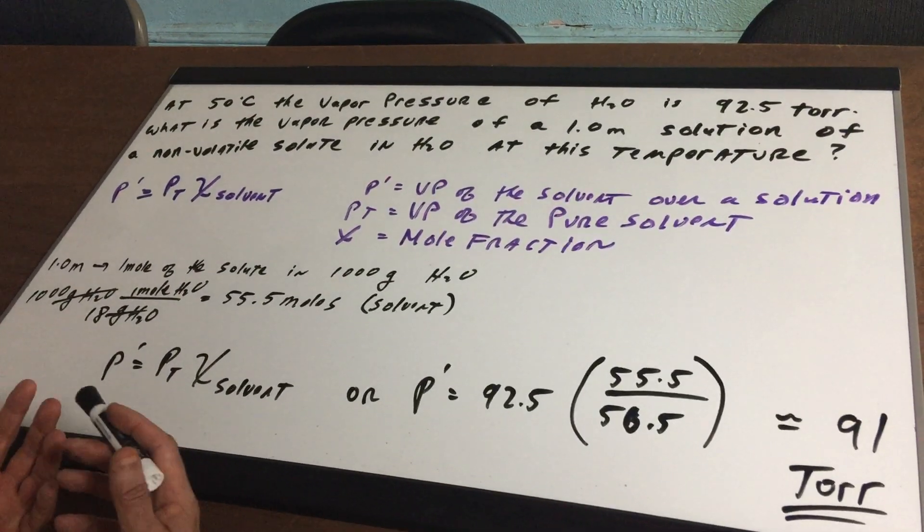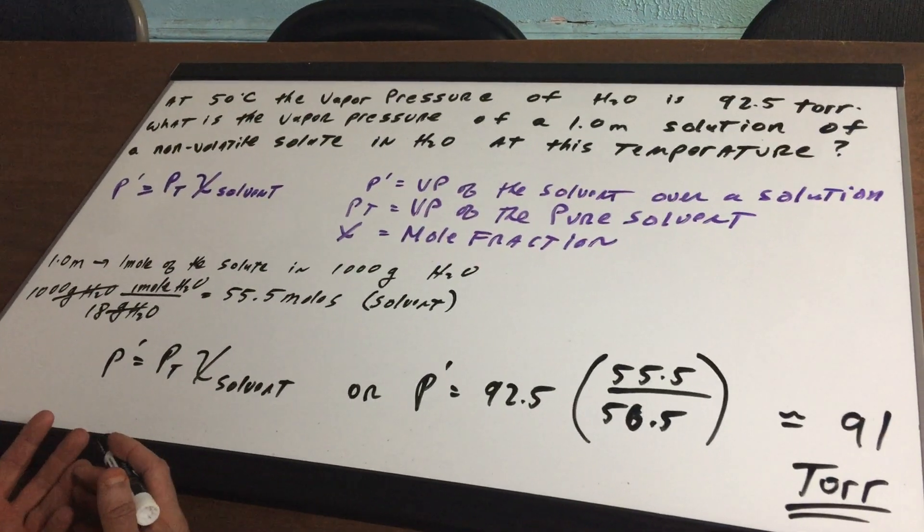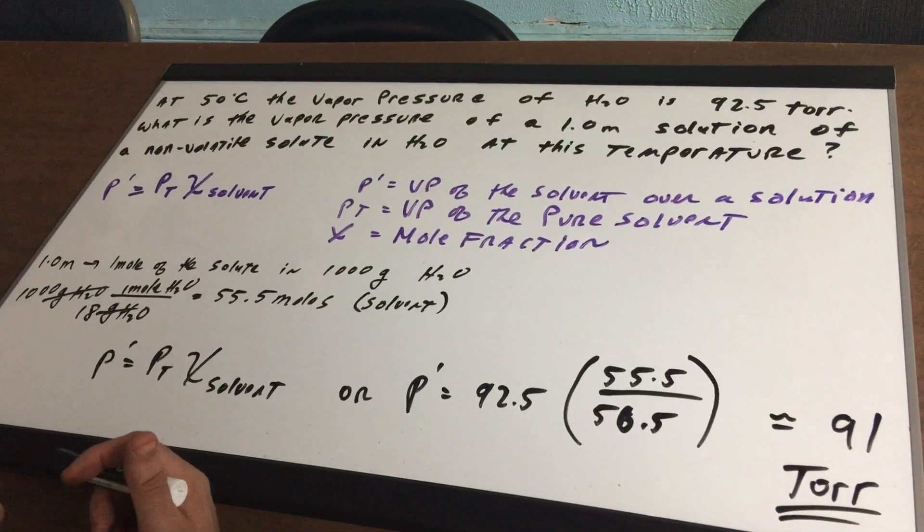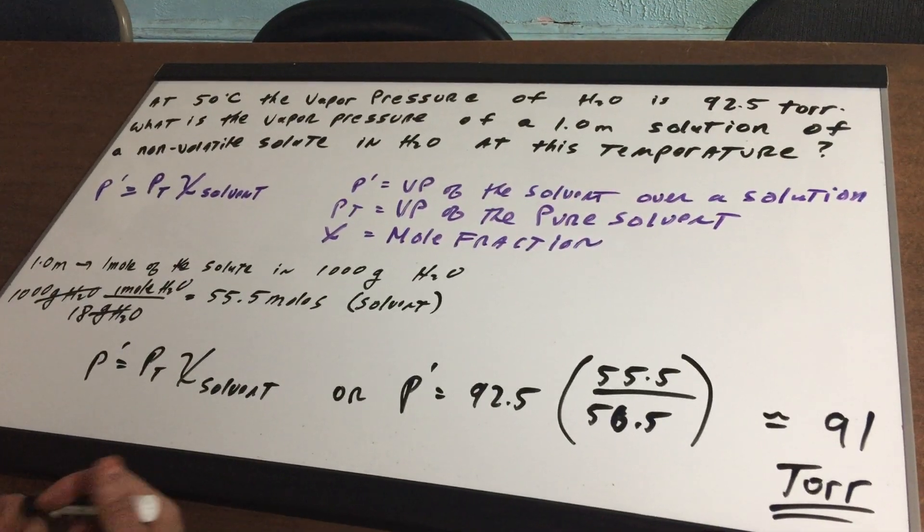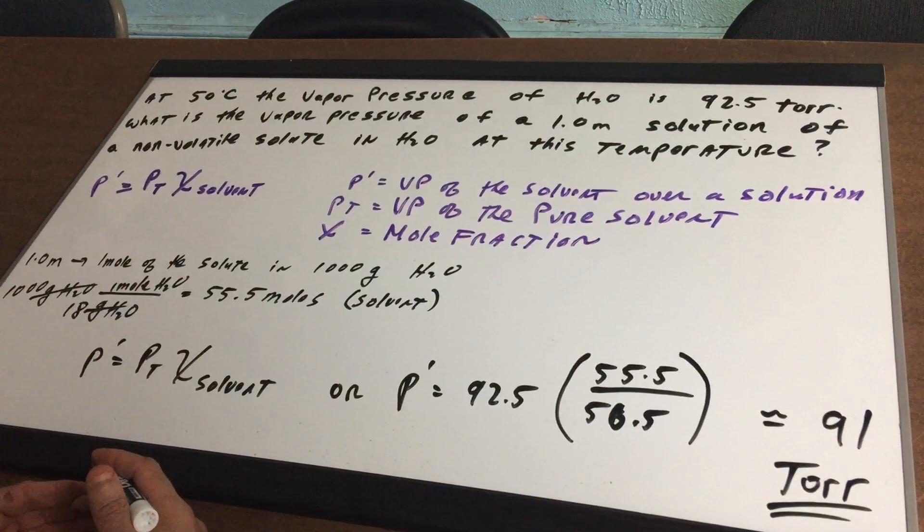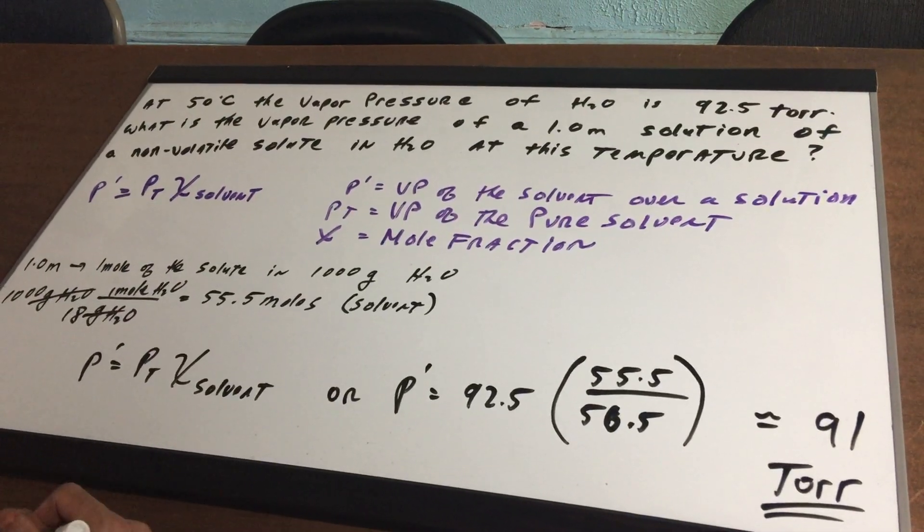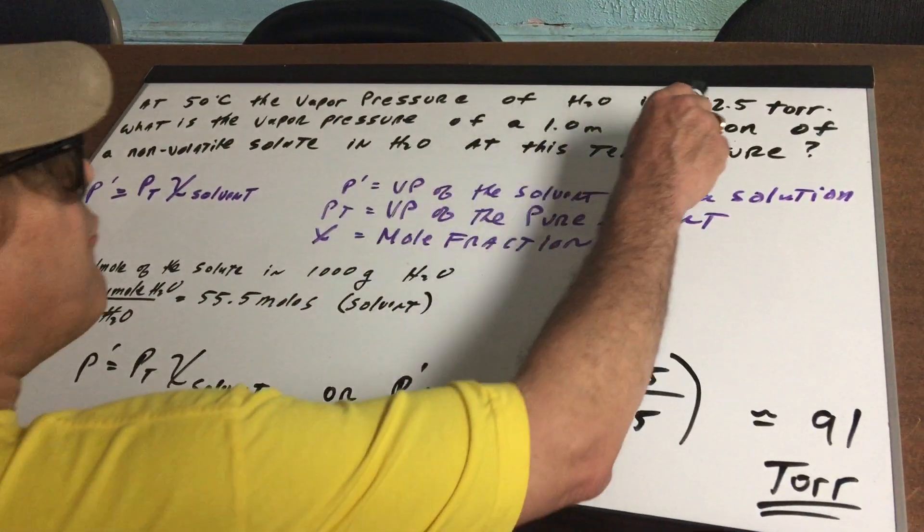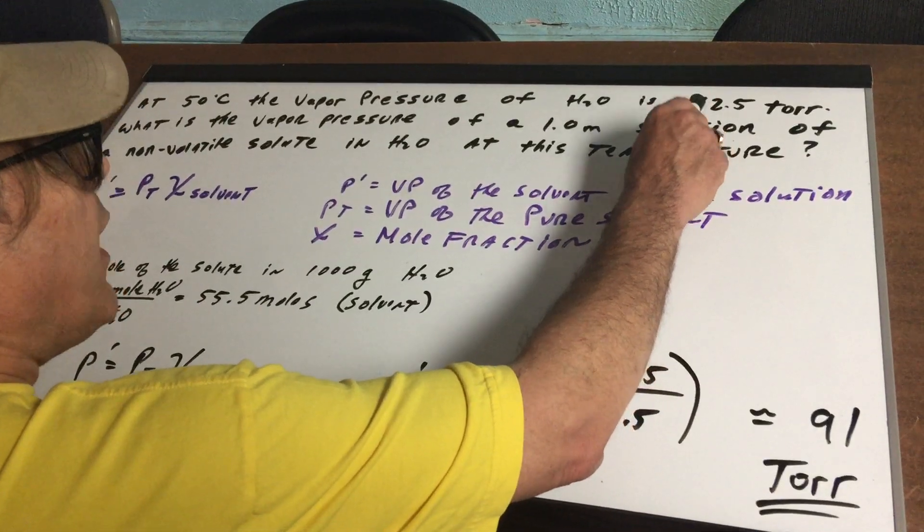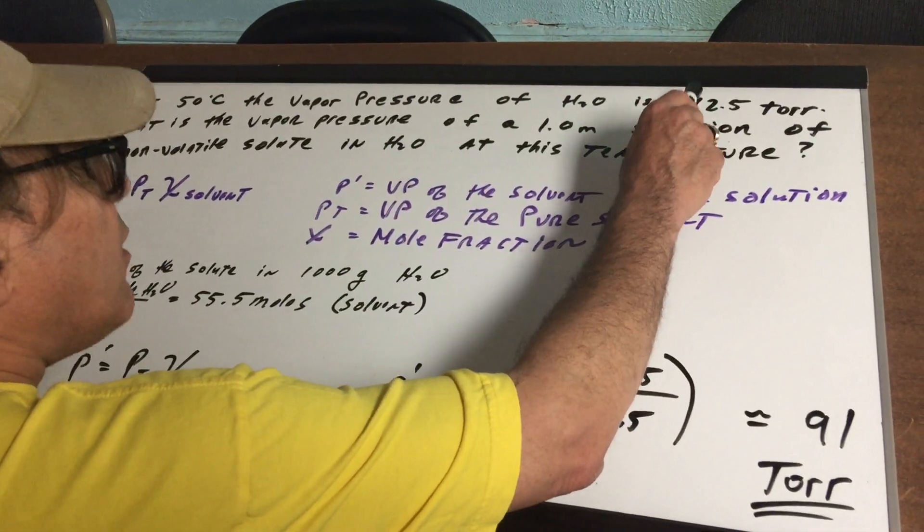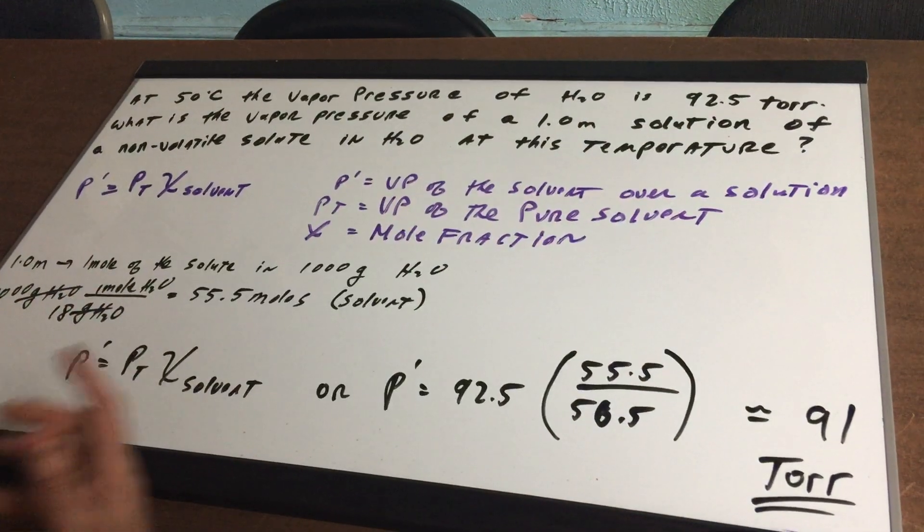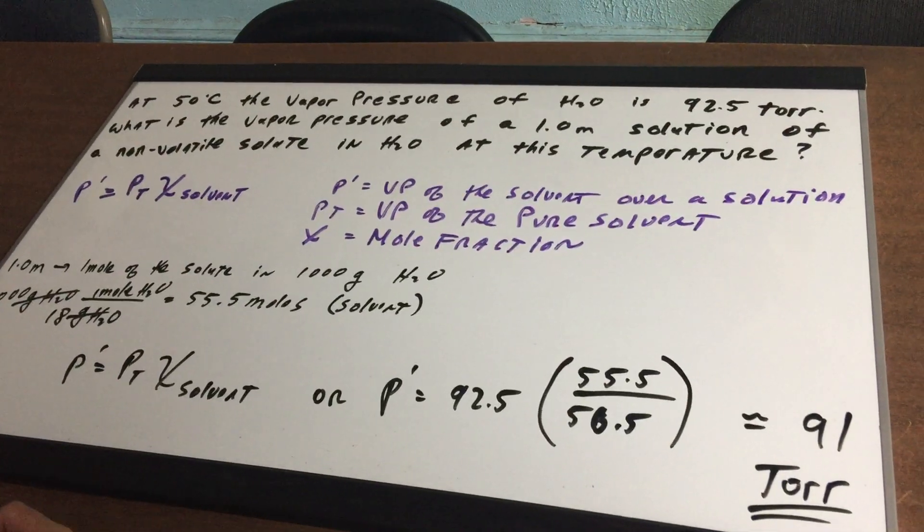What is the vapor pressure of a 1.0 molal solution of a non-volatile solute in water at this temperature? Well, before we do anything, whenever you place a non-volatile solute, the boiling point is going to go up, osmotic pressure goes up, the freezing point goes down, and the vapor pressure goes down. So if we ever had to guess, we're going to guess at a number a little tiny bit below 92.5 torr.